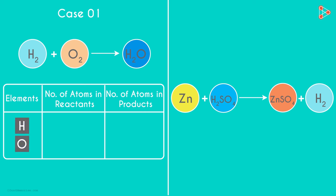Now for each of these elements, we need to find the number of atoms on the reactants side. The number of atoms of Hydrogen is 2, and the number of atoms of Oxygen is also 2. Now we move to the right-hand side which has the product. How many atoms of Hydrogen exist in the product? Two. And how many atoms of Oxygen? Just one.